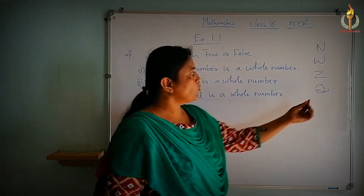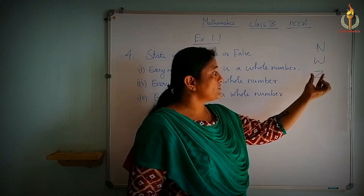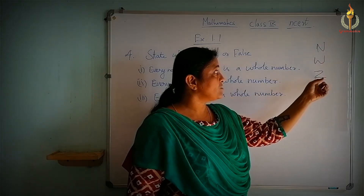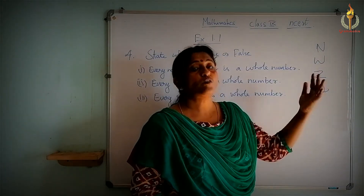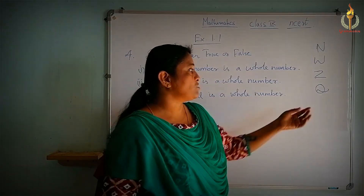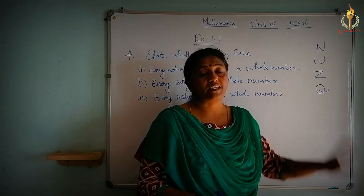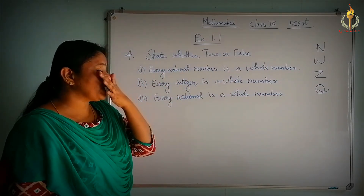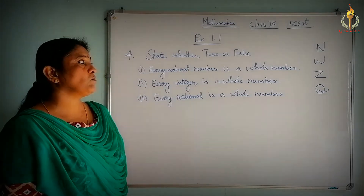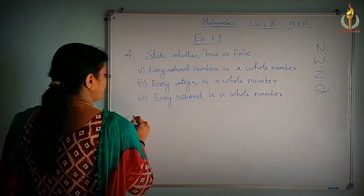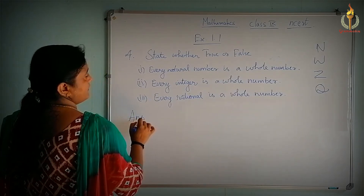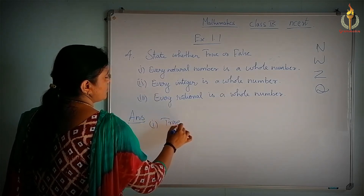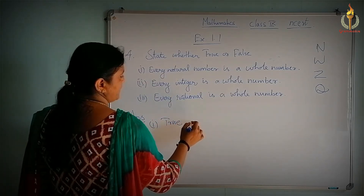Q contains all these numbers — natural numbers, whole numbers, and integers are all within rational numbers. Natural numbers are inside whole numbers. So rational numbers contain all three sets of numbers. Every natural number is a whole number — it is true, because whenever you take any natural number, obviously it is a whole number. For example, 2 is a natural number and it is also a whole number.